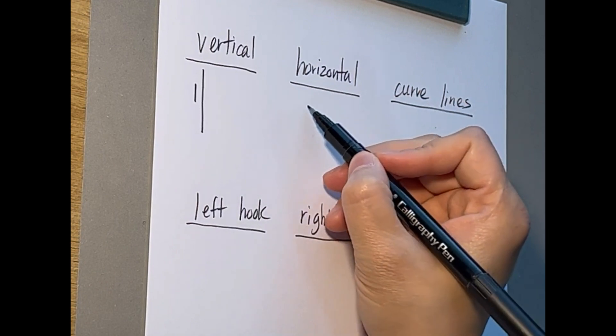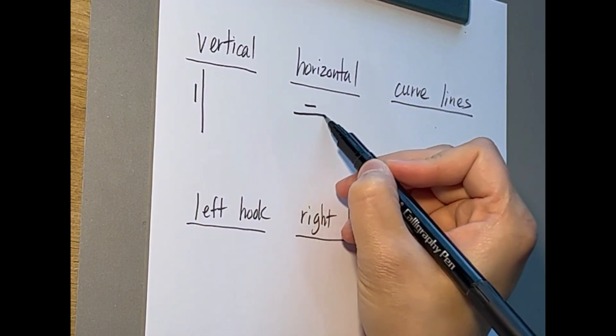A horizontal line could be short or long as well, but just going from left to right.